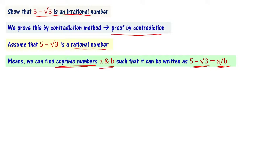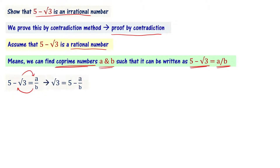Since a/b is in its simplest form, a and b have only 1 as a common factor, so they are co-prime numbers. Starting from 5 minus root 3 equals a by b, rearranging gives root 3 equals 5 minus a by b.